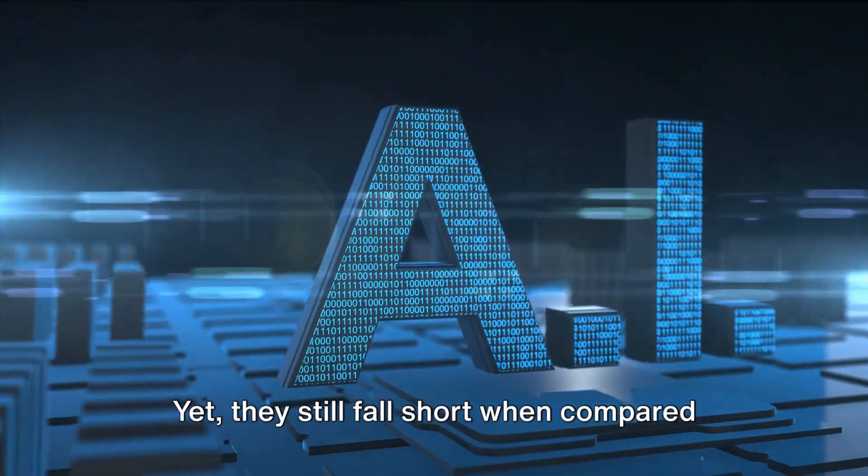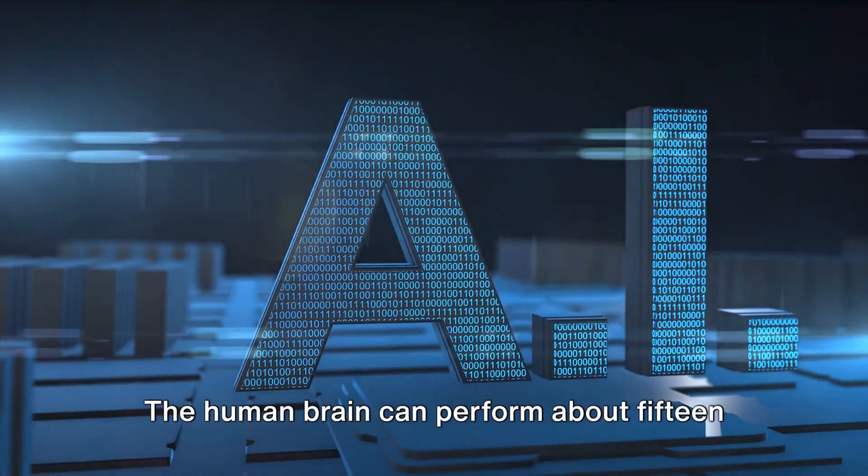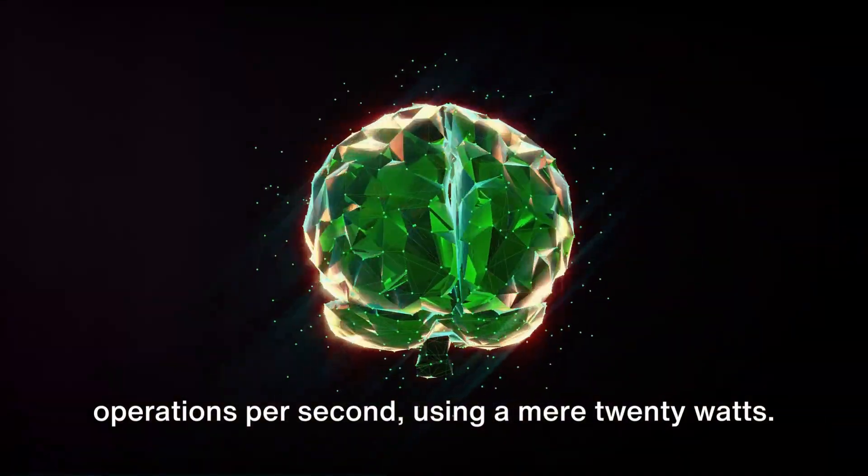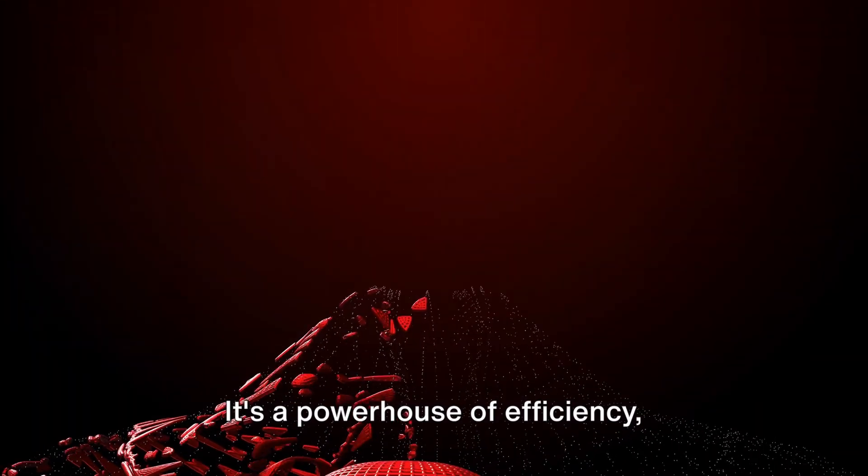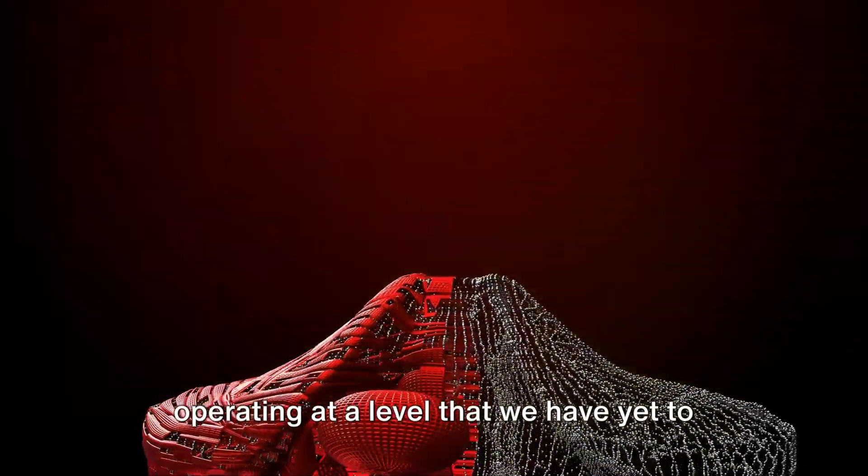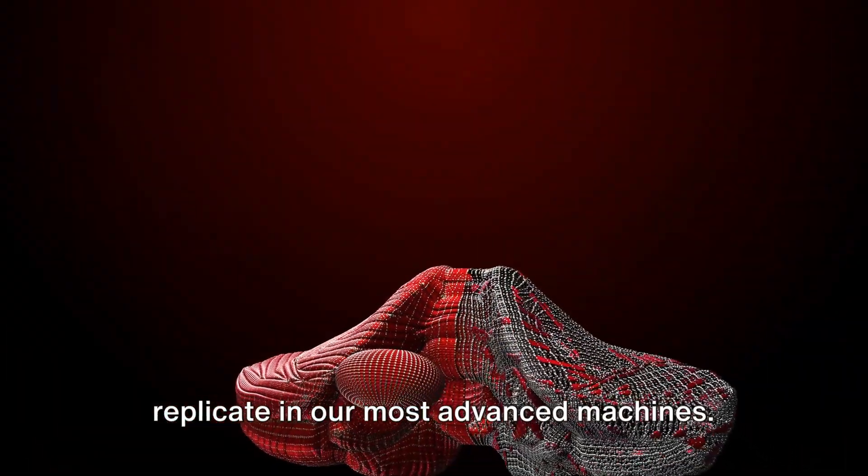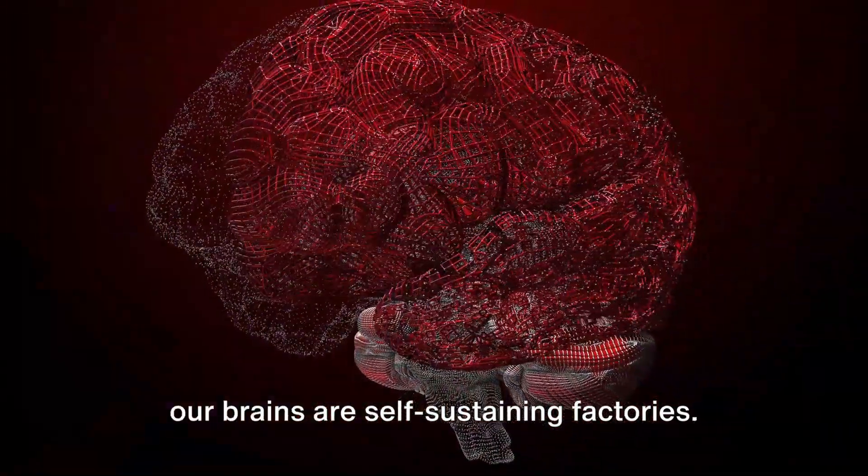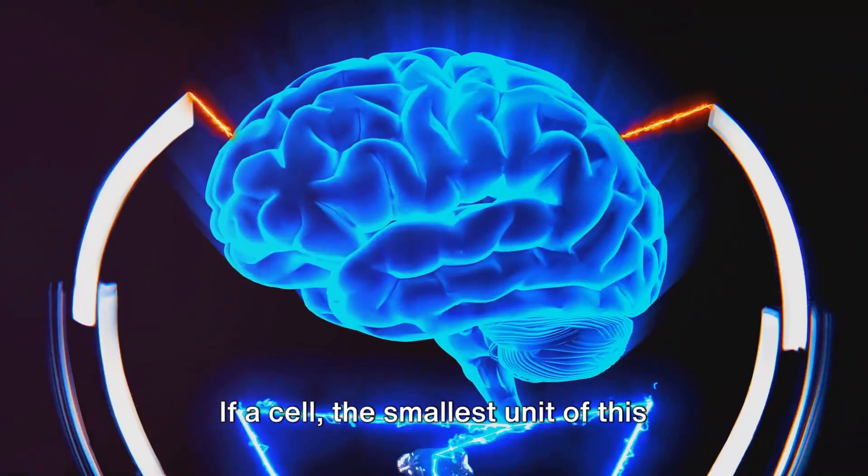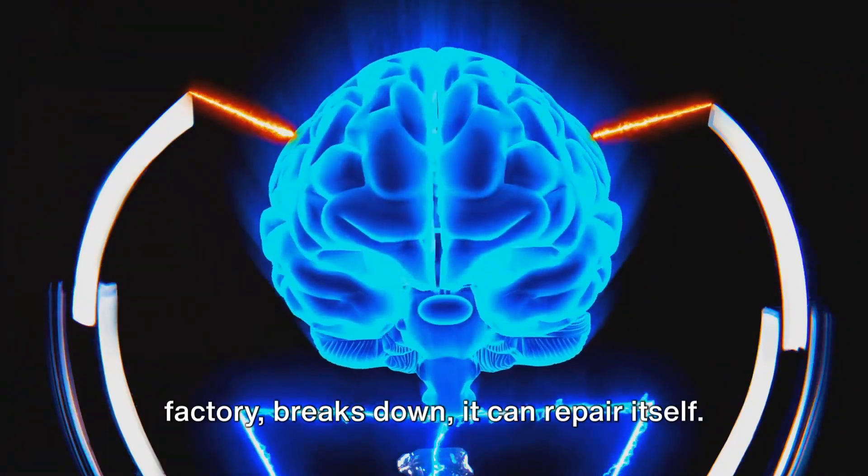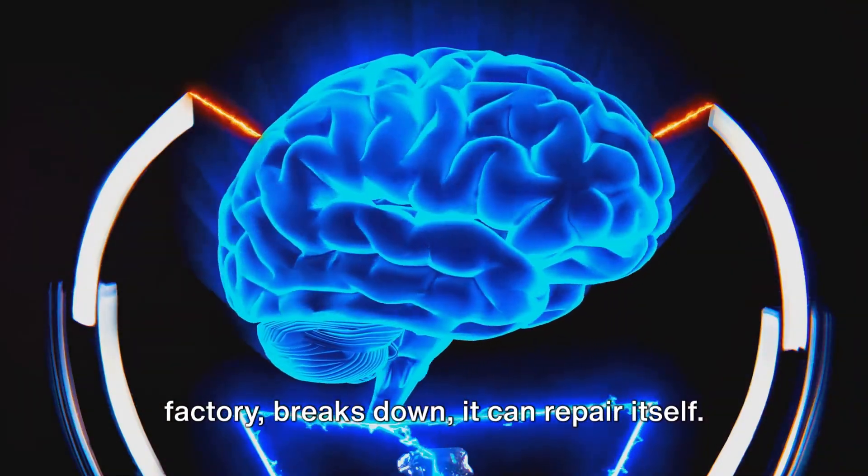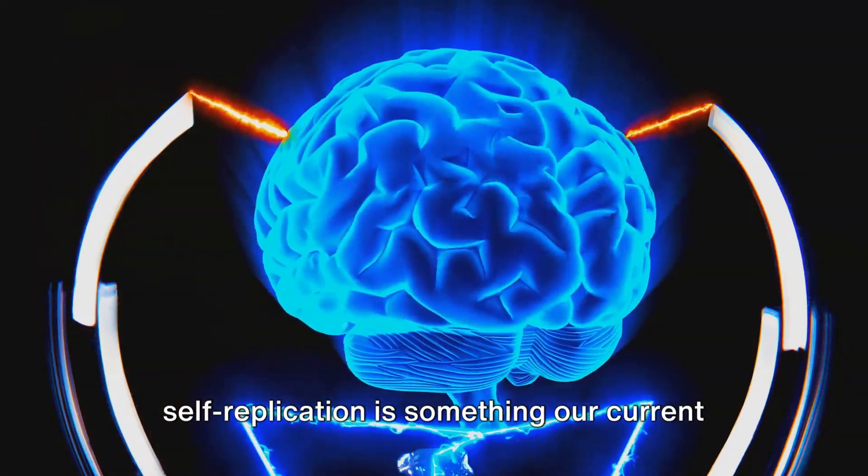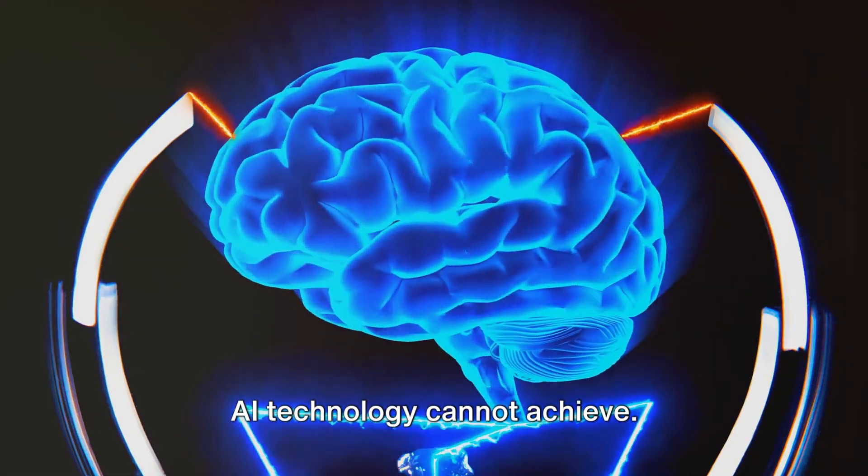Yet they still fall short when compared to the human brain. The human brain can perform about 15 operations per second using a mere 20 watts. It's a powerhouse of efficiency, operating at a level that we have yet to replicate in our most advanced machines. And unlike our computers and machines, our brains are self-sustaining factories. If a cell, the smallest unit of this factory, breaks down, it can repair itself. This level of self-healing and self-replication is something our current AI technology cannot achieve.